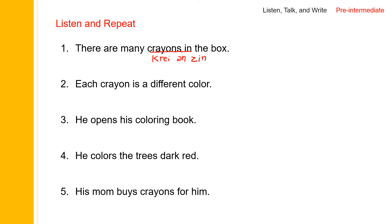And each crayon is a different color. Say 'is a.' Is. Each crayon is a different color. So after N, you don't have to pronounce the T. Say 'different,' not 'differenT.' Just say 'different color.' Each crayon is a different color.